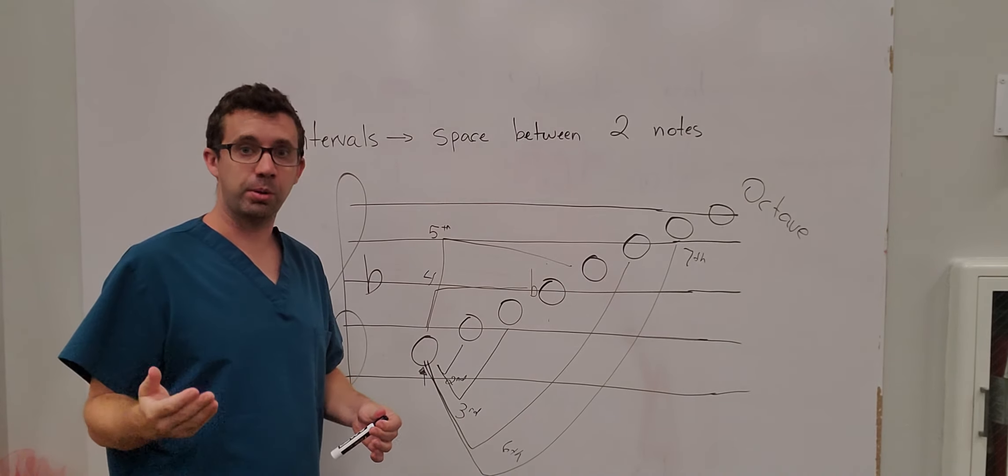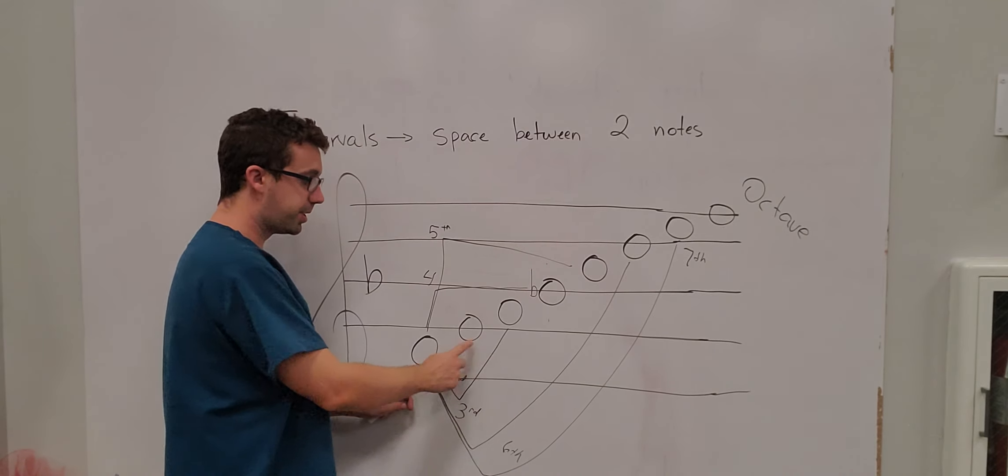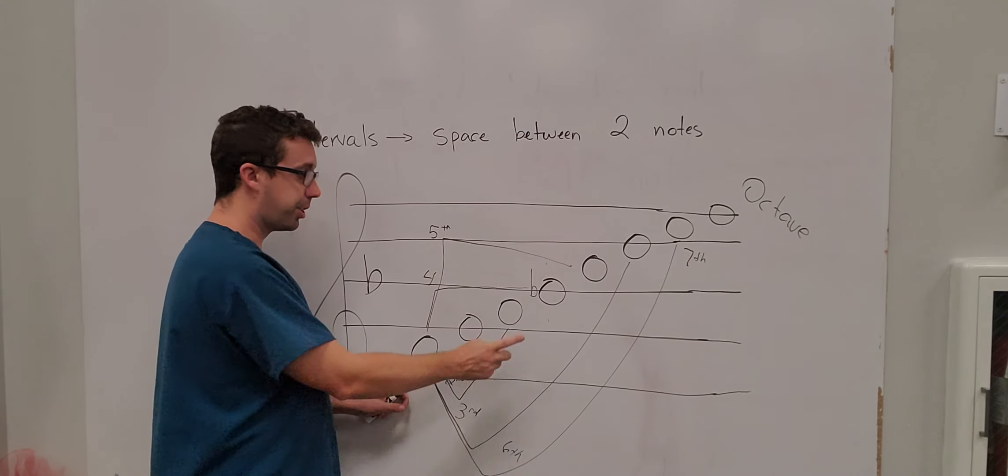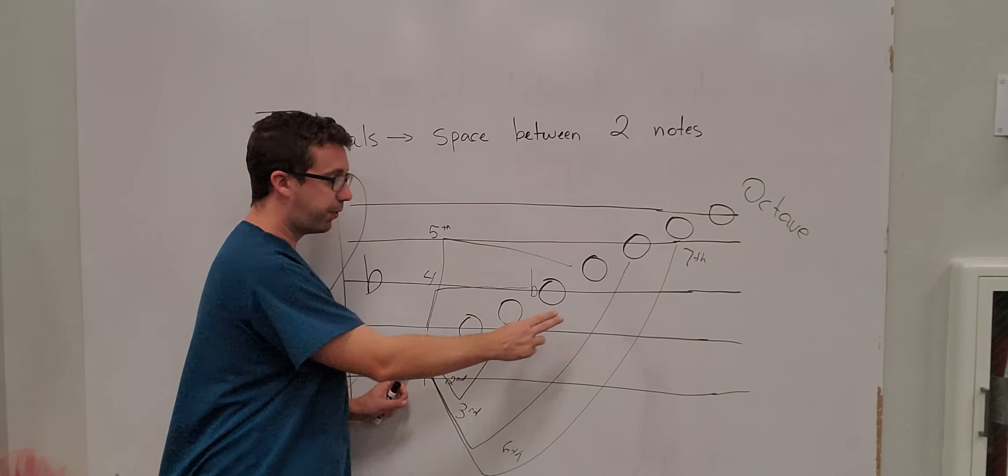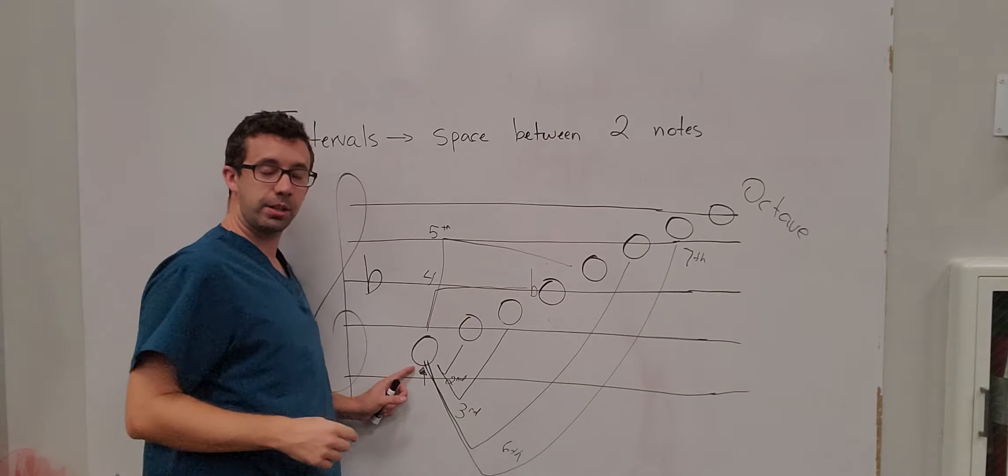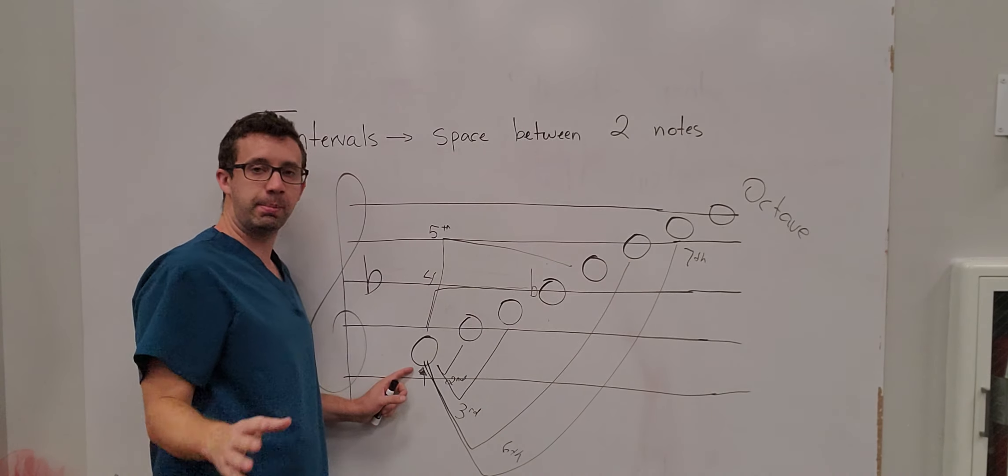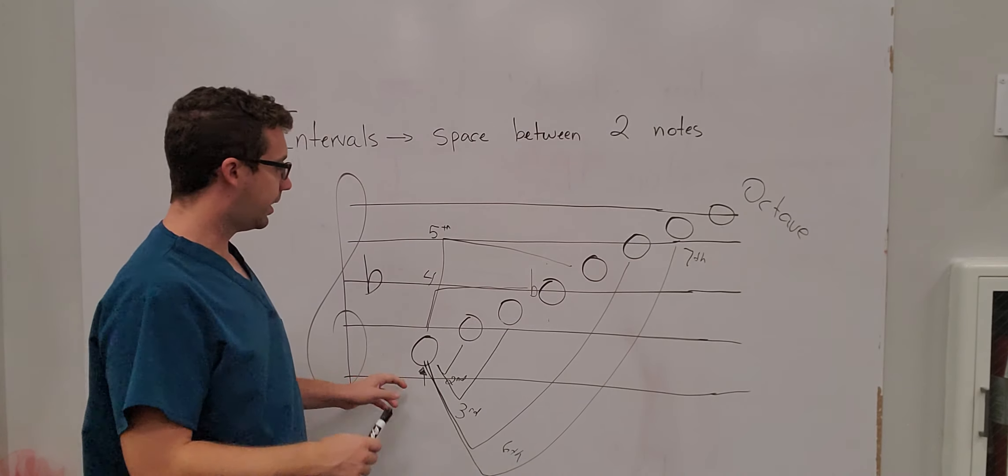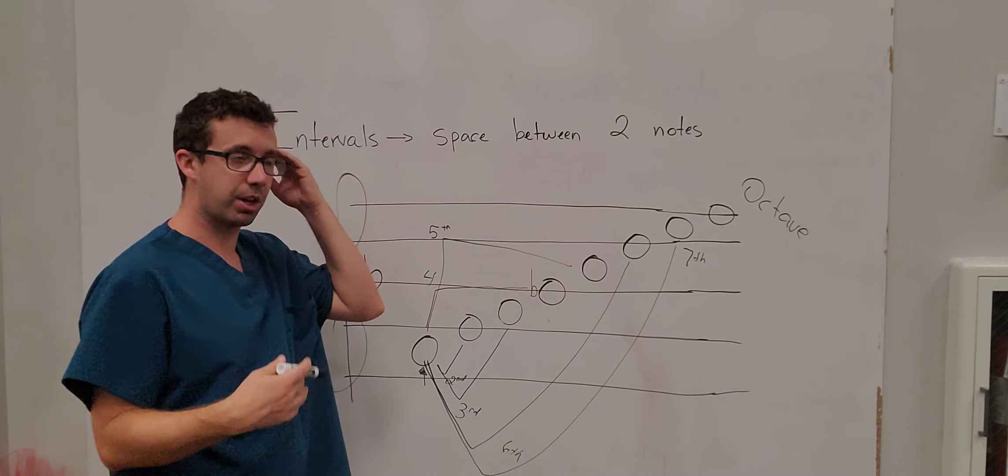So if you notice, there was a really easy pattern that we followed. We just started at the first one. The second note of the scale is a second, a major second. The third note of the scale is a major third. The fourth note of the scale is a perfect fourth. The fifth note is a perfect fifth. The sixth note is a major sixth. Seventh note is a major seventh. And then an octave is an octave or an eighth, a major eighth octave, same thing.